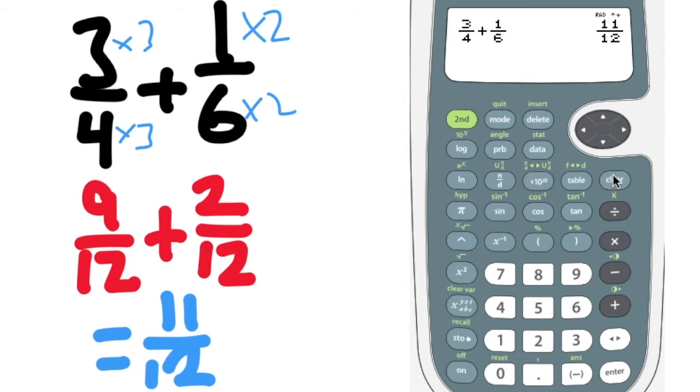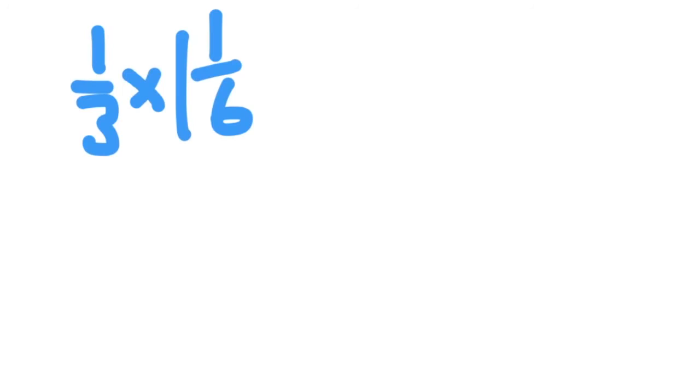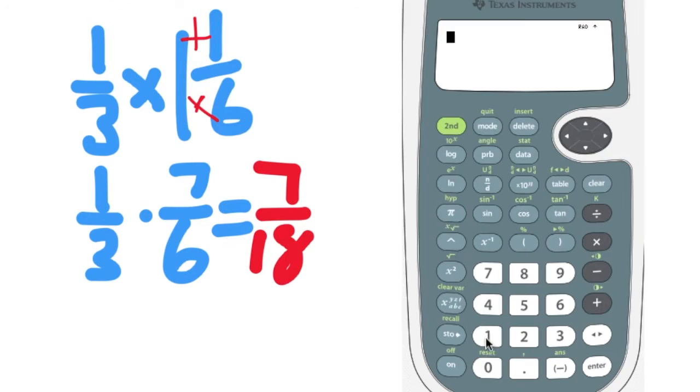1 third times 1 and 1 sixth. So you do 1 third times. Now remember to change 1 and 1 sixth into an improper fraction. That'll become 7 sixths. When you multiply you don't need common denominators. You just multiply numerators and denominators. And you get 7 eighteenths.